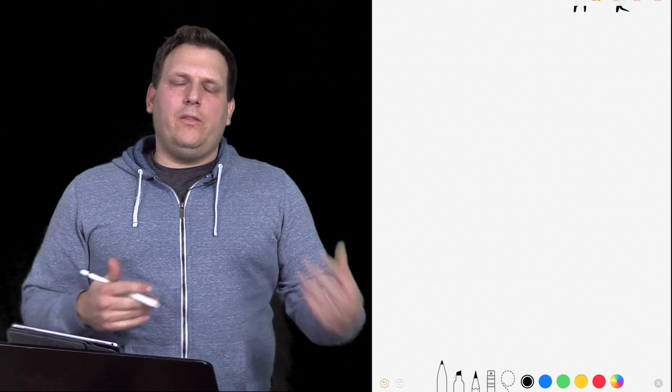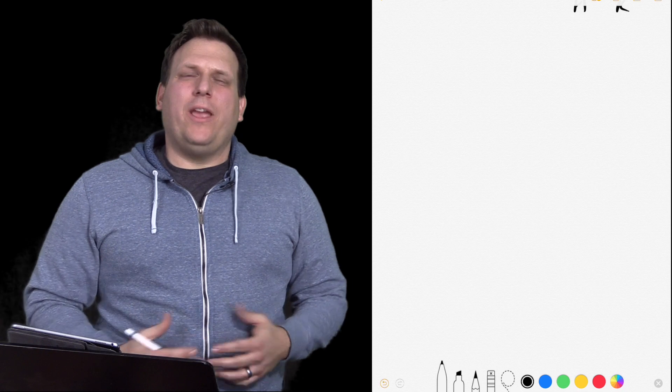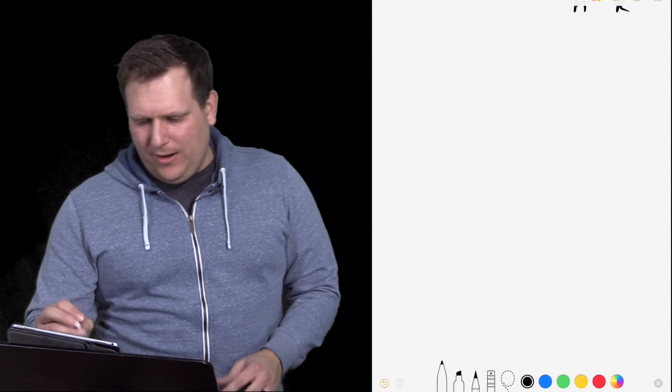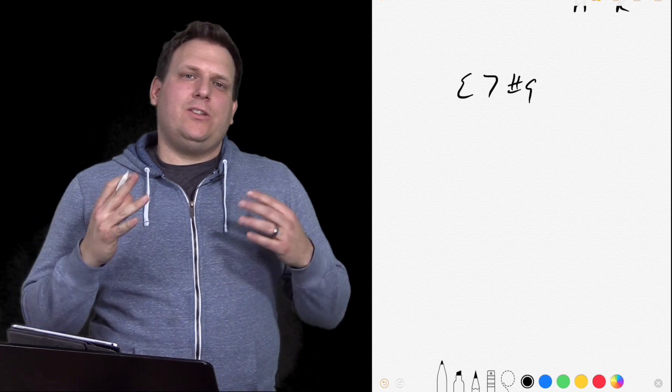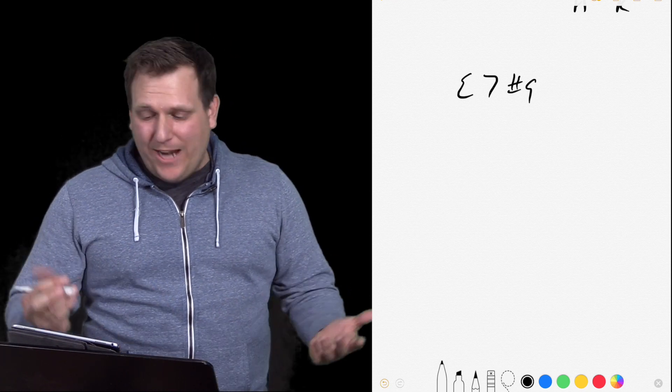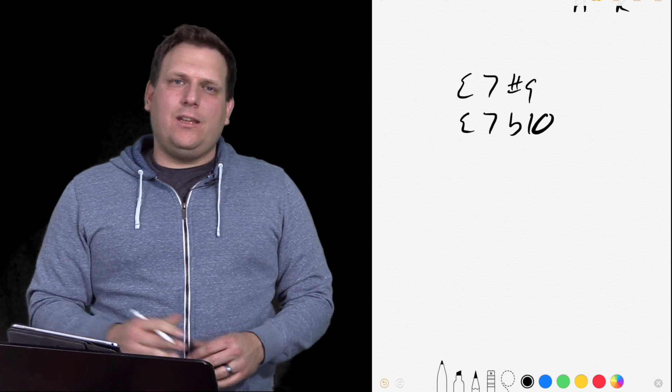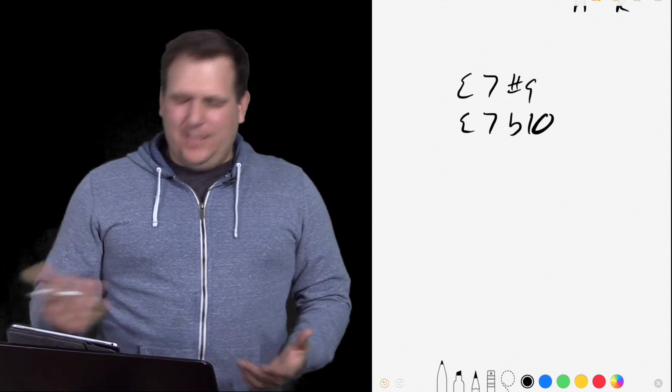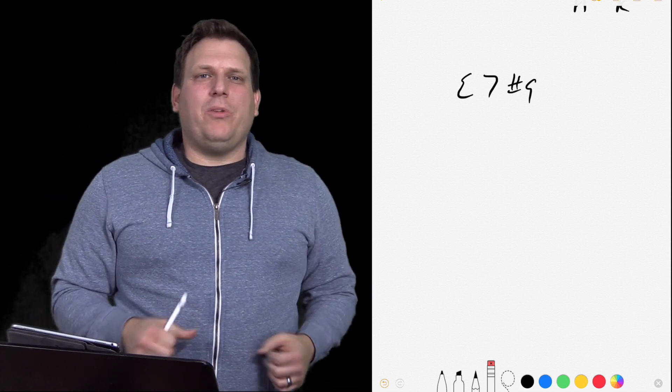Alright, so when you hear the Hendrix chord, what are you hearing? The answer to that has actually multiple answers. But the first answer is you're hearing an E7 sharp nine. That's actually the technical name for the chord. It could actually technically be called an E7 flat 10. We're not going to get that deep into this. So we're going to go ahead and erase that because you'll see E7 sharp nine all over the place.